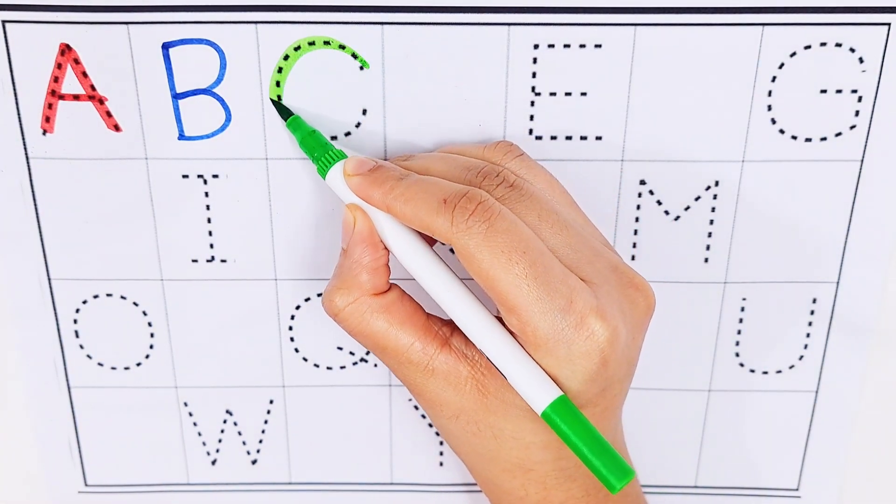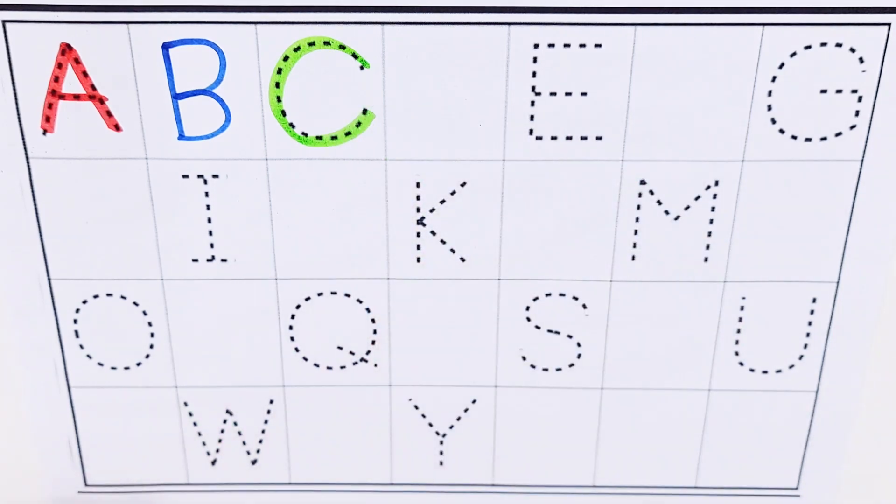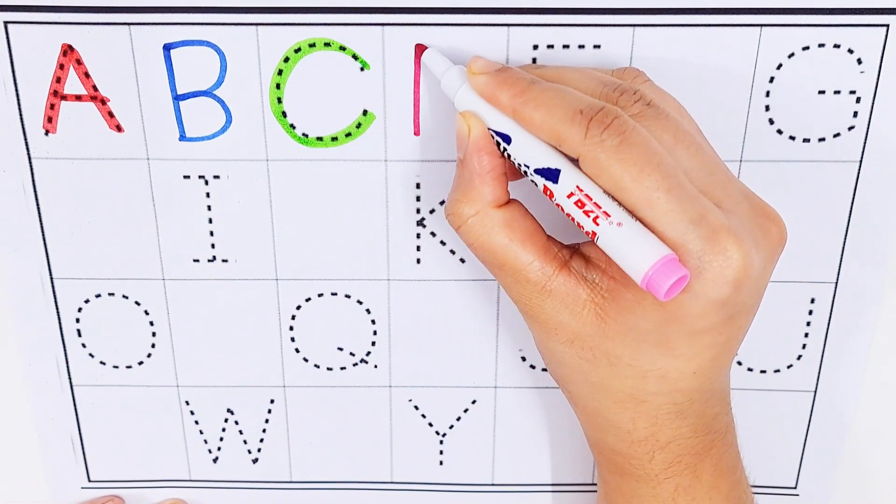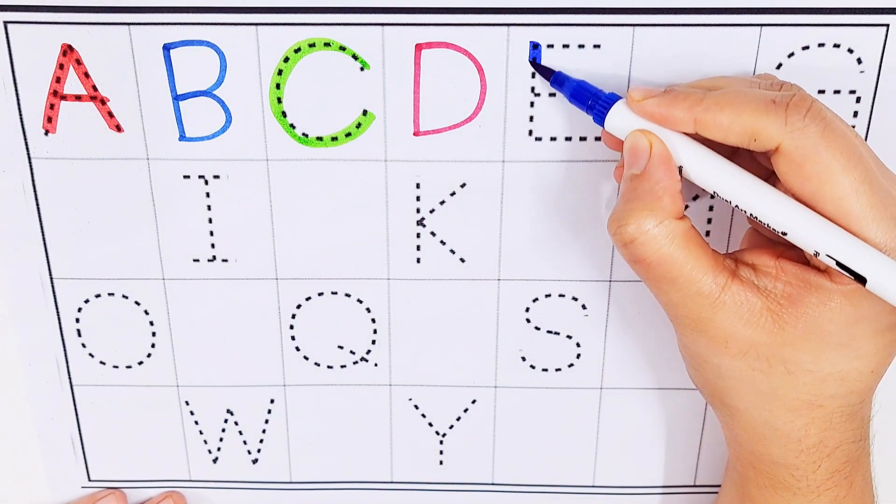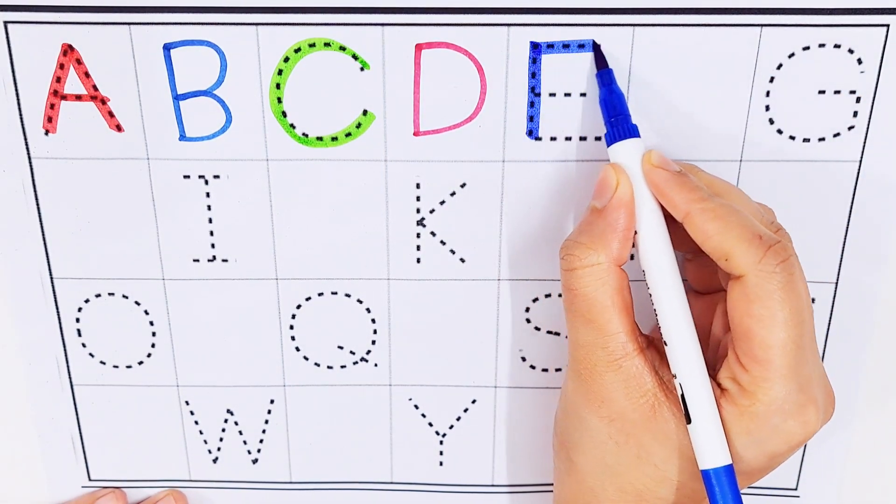C, C for candy. D, D for dog. E, E for egg.